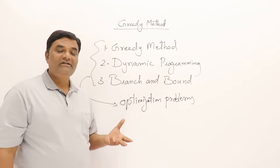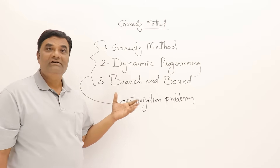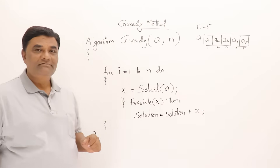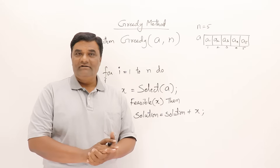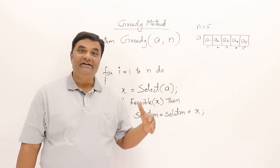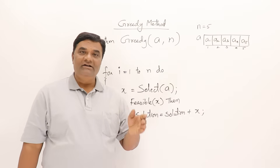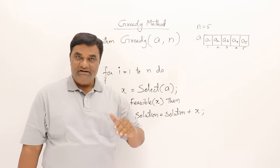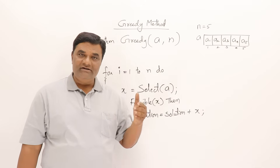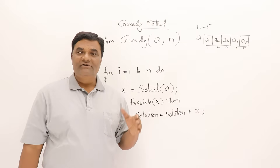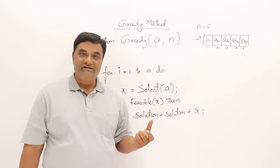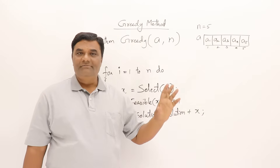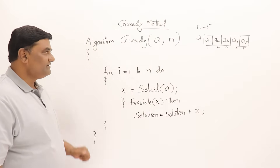Now I will explain the greedy method and its approach. Here is the general method of greedy — I have written an algorithm. Greedy method says that a problem should be solved in stages. In each stage we consider one input from the given problem, and if that input is feasible we include it in the solution. By including all feasible inputs we get an optimal solution.